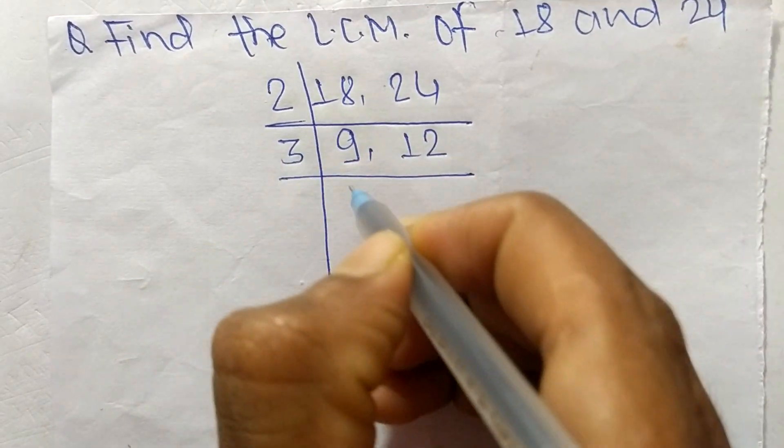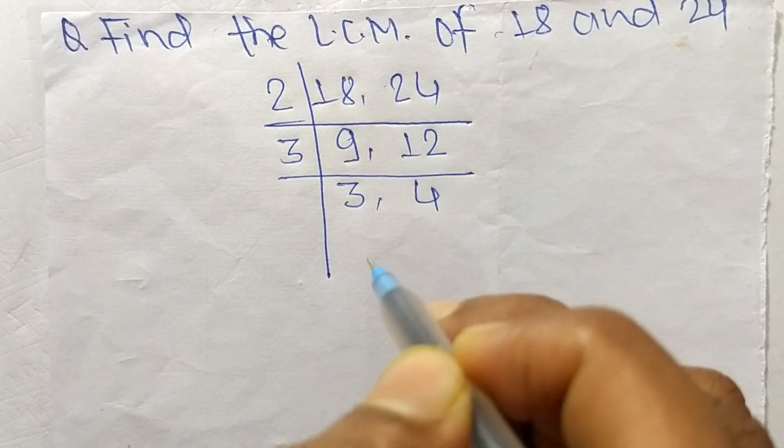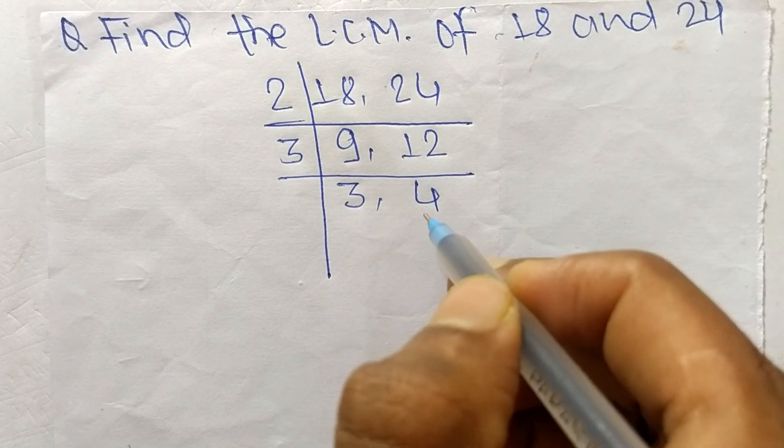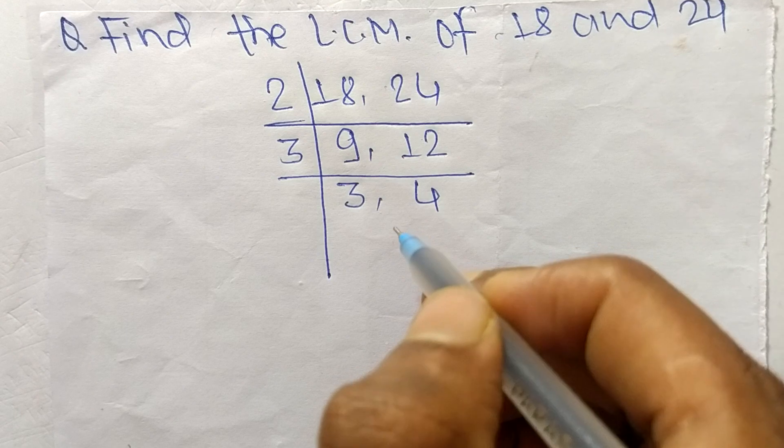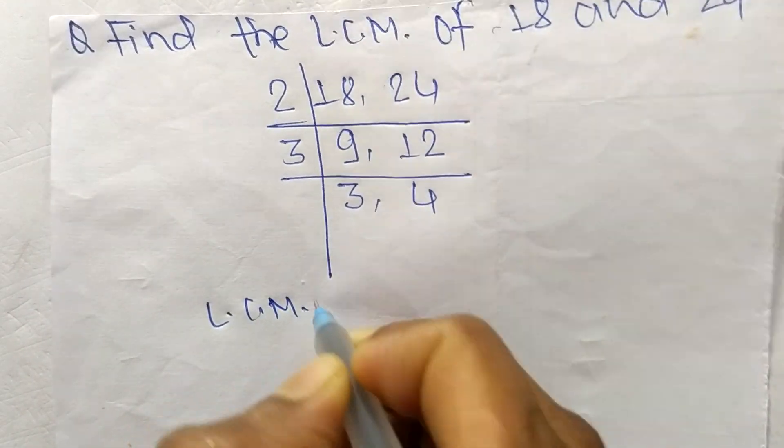3 times 3 means 9 and 3 times 4 means it is 12. So at last we have here 3 and 4 which are not exactly divisible by the same number, so its LCM is equal to from this part it is 2 times 3 and from this part it is 3 times 4.